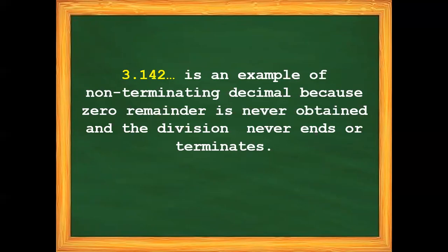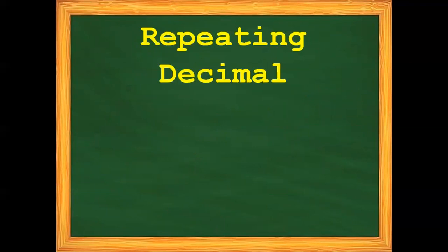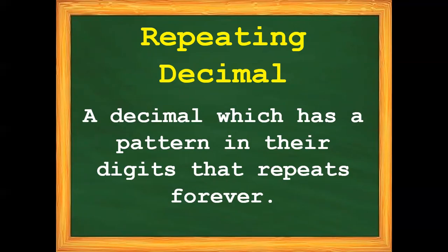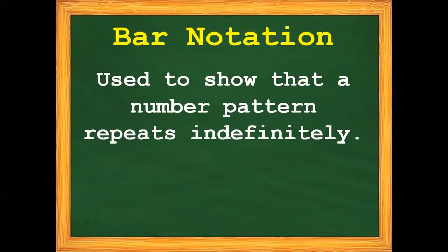Now let's proceed with the last type of decimal — repeating decimals. A repeating decimal is a decimal which has a pattern in its digits that repeats forever. In repeating decimals, we use bar notation. Bar notation is used to show that a number pattern repeats indefinitely. We use bar notation when the given decimal is a repeating decimal.